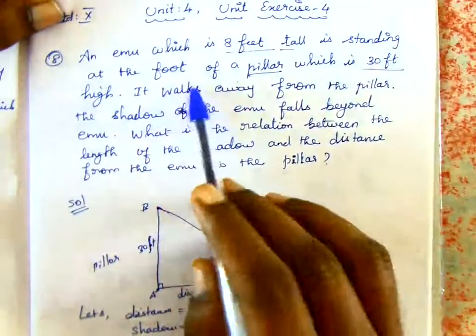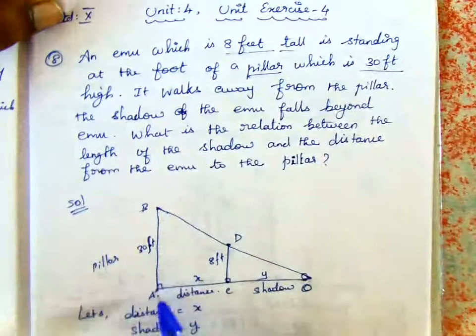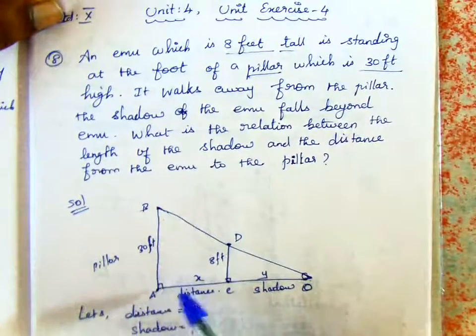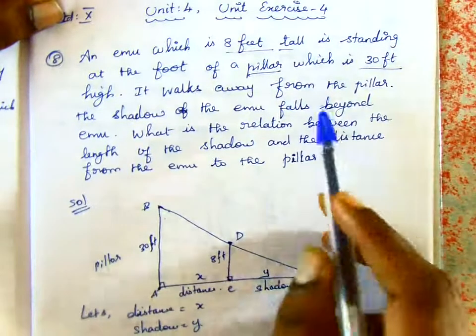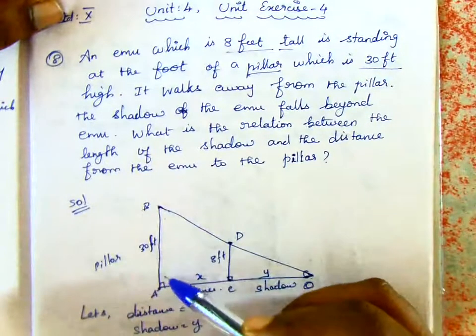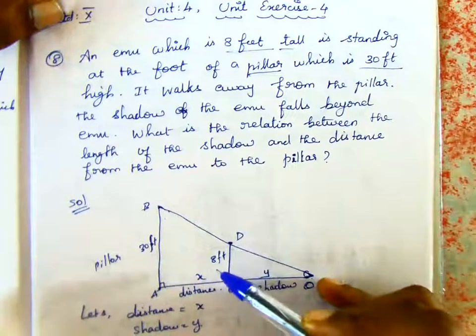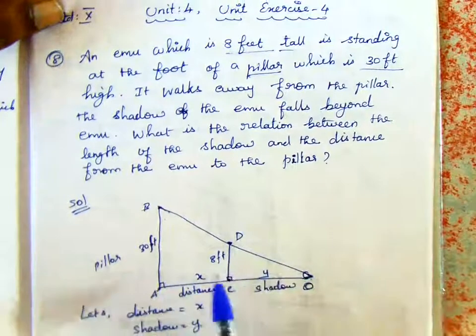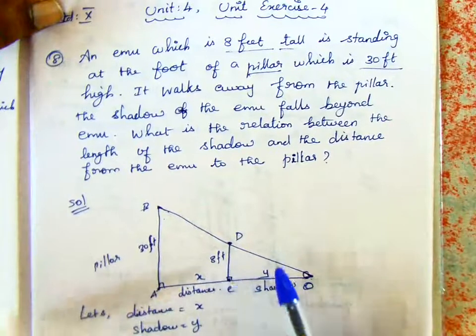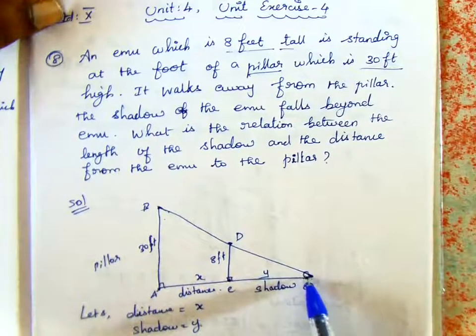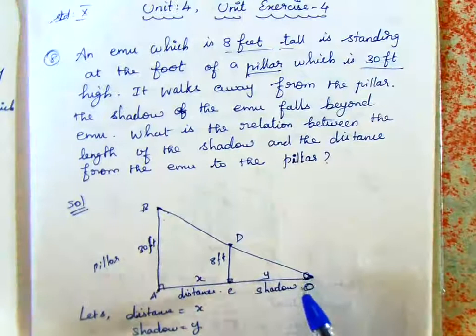So, the emu is standing at the foot of the pillar. The pillar height is 30 feet and the emu height is 8 feet. We have a distance between these two. If you look at the emu, the shadow extends beyond. This is the reflection point.